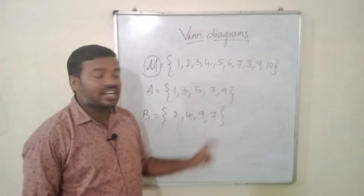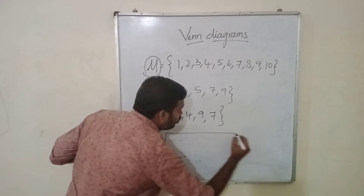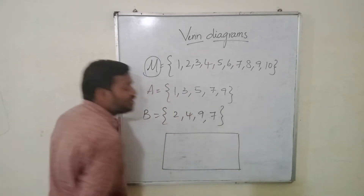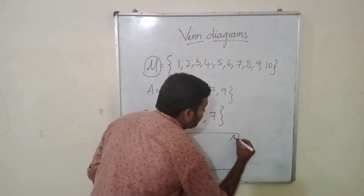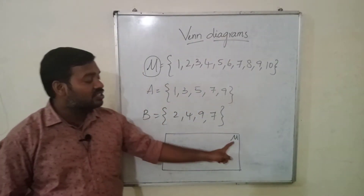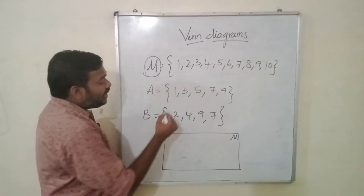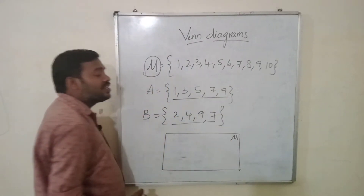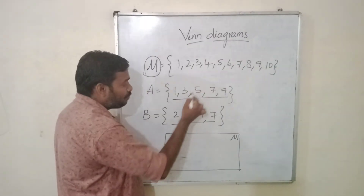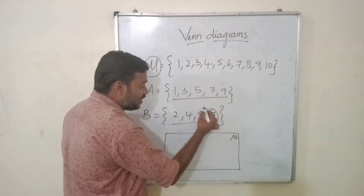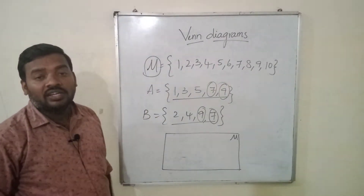A is 1, 3, 5, 7, 9 and B is 2, 4, 9, 7. First of all we need to take the universal set because everything is present in the universal set. We have to consider universal set first. Then A and B — and see whether there are common elements in both. Is 1 present in B? No. Is 3 present in B? No. Is 5 present in B? No. Is 7 present in B? Yes. Is 9 present in B? Yes. That means we have 7 and 9 common in both the sets.